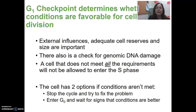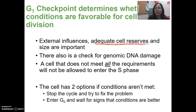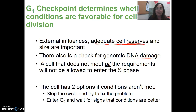The G1 checkpoint determines whether all conditions are favorable for cell division. It looks for things like adequate cell reserves — meaning nutrients, lipids, carbohydrates, and proteins — as well as adequate cell size, and checks for DNA damage. When the cell does not meet all requirements, it will not proceed to the S phase. There are two options: stop the cycle and try to fix the problem, or enter G0 and wait in a dormant state.